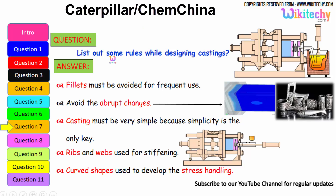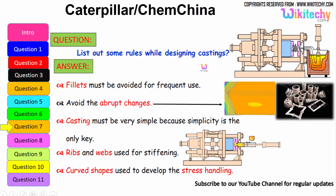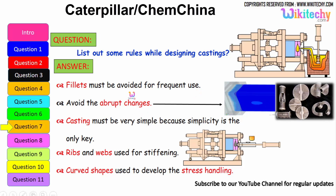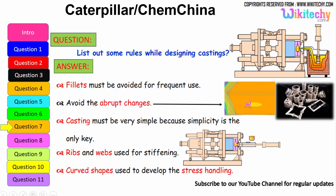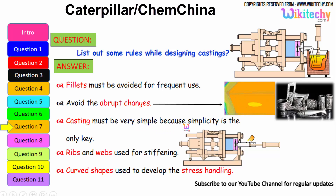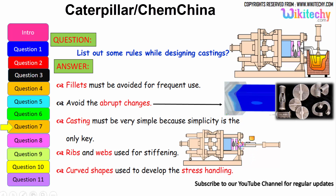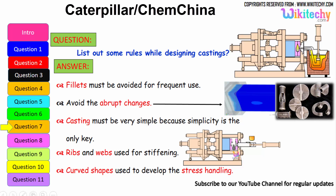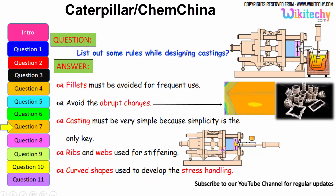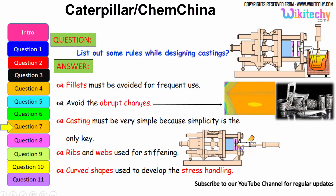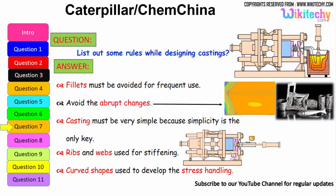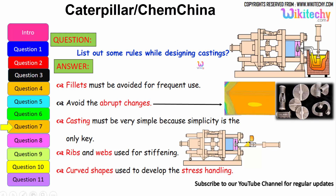Let us see some of the rules while designing castings. Fillets must be avoided for frequent use. Avoid abrupt changes in section. Casting must be very simple because simplicity is the key. Ribs and webs are used for stiffening. A curved shape should be used to handle stress effectively. These are all some of the rules which we have to follow for castings.